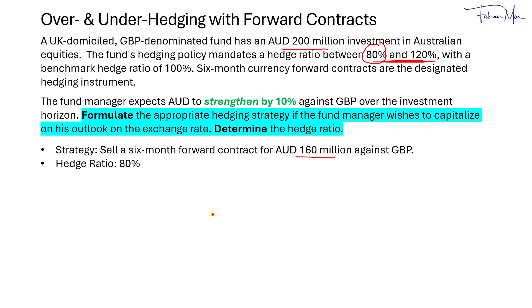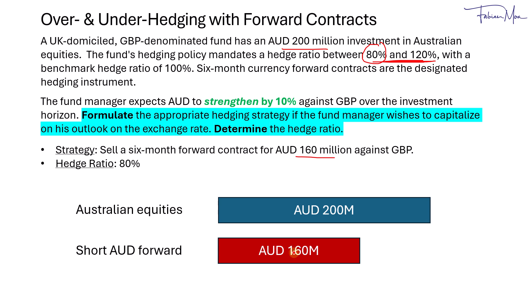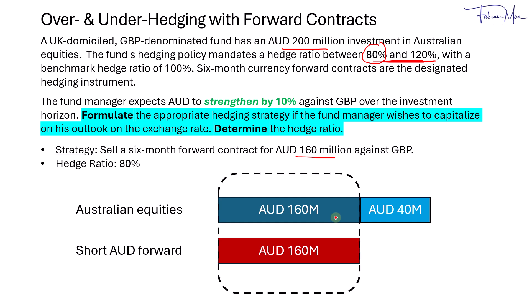To see how this benefits the fund manager: we have Australian equities of 200 million Australian dollars, which we hedge with a short Australian dollar forward of 160 million Australian dollars. Of the 200 million equities, 160 million Australian dollars will be hedged with the short forward position. If the Australian dollar were to strengthen, there would be a currency gain on the 160 million of equities, but on the forward position there would be a loss — the gain is offset by the loss perfectly. For the excess 40 million Australian dollars of equities, when Australian dollar strengthens by 10%, there would be a currency gain on that 40 million. That is where the fund manager will be able to outperform by under-hedging their currency exposure.